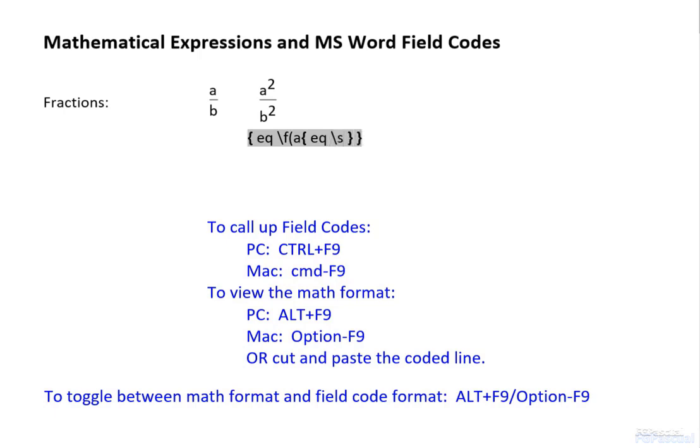Type a, then the field code for exponentiation: eq space backslash s backslash up 4 to raise the exponent 4 points up. Open parenthesis, 2 for the exponent, and then a closing parenthesis. Now, instead of finishing the entire fraction, we could cut this exponentiation code line and paste. What do you think?